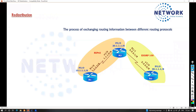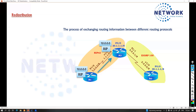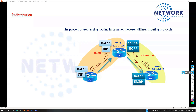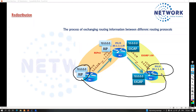Redistribution is the process of exchanging routing updates between different routing protocols. After configuring redistribution, routes learned via RIP arrive at the ASBR as RIP routes. The border router then converts them into EIGRP and sends them onward. We are translating routes from one protocol to another to ensure end-to-end communication — which is the ultimate goal of any routing protocol.